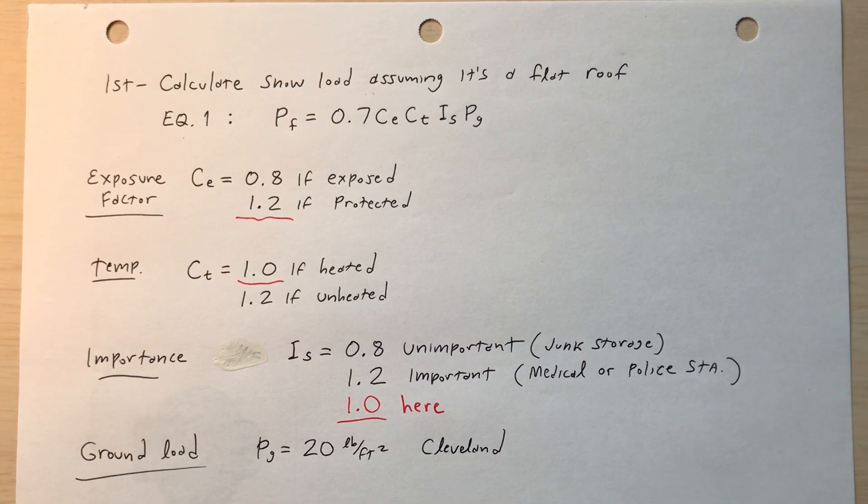And then lastly, the ground load. That depends on the geography, where you are in the country, or even where you are locally. If it's up high in the mountains, it might be a special case. But for Cleveland, I'll assume that p_g is 20 pounds per square foot. So that depends on the locality.